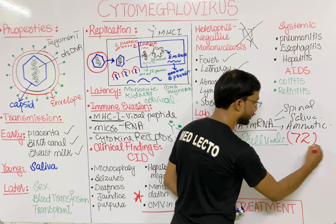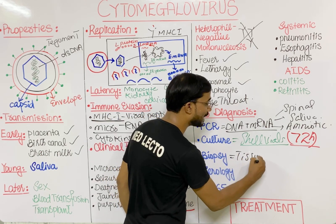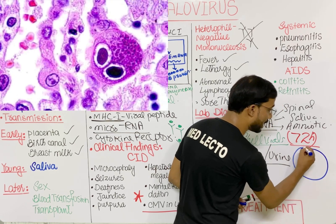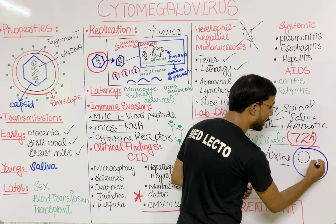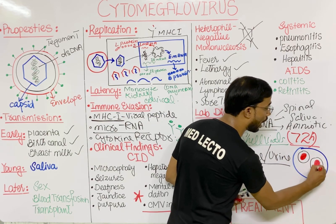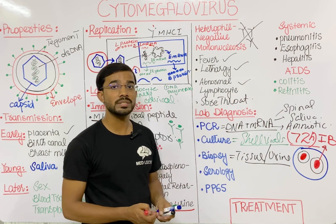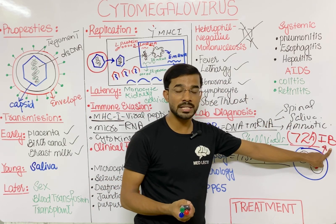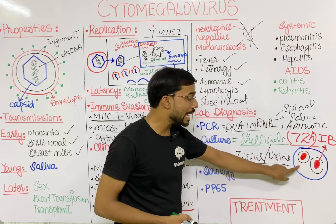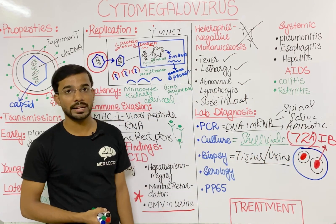The culturing process takes approximately 72 hours. Next is biopsy — you can take a biopsy of tissue, or urine can also be used. In that case you will see multinucleated giant cells. Inside the giant cell you will see multiple nuclei, and inside the nucleus you will see inclusion bodies. These inclusion bodies look like an owl's eye. You can detect these inclusion bodies through staining or fluorescent antibodies.